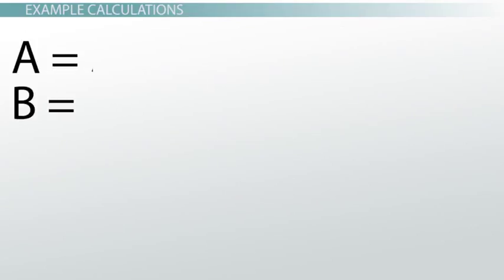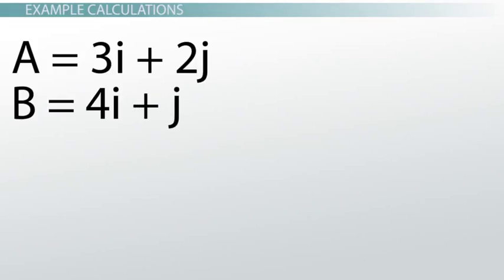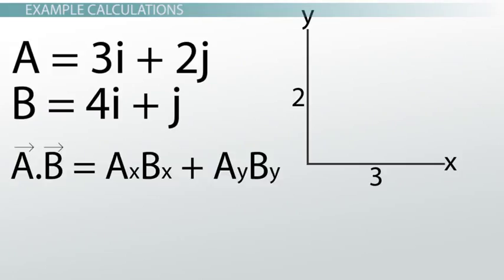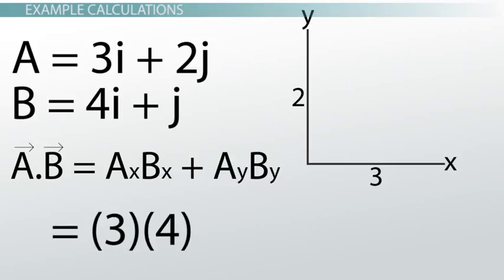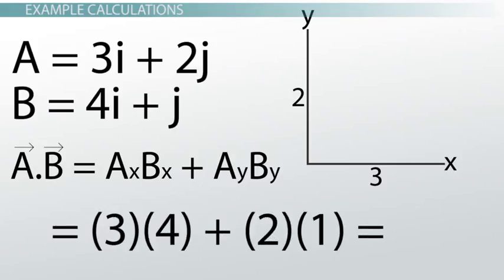One more example — a more abstract one. If vector a is represented by 3i plus 2j, and vector b is represented by 4i plus j, what is the scalar product of these vectors? We have our vectors in component form: vector a is 3 units in the x direction and 2 units in the y direction. So we use the component form equation, multiplying the x components and the y components and adding them up. The scalar product is equal to 3 multiplied by 4, plus 2 multiplied by 1, which is 14.